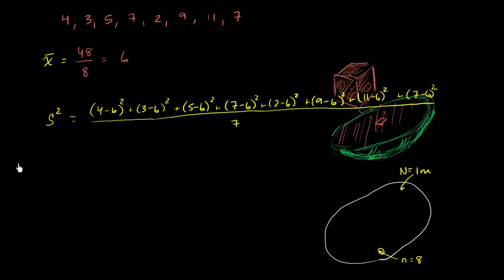And so this is going to be equal to the unbiased sample variance, and I could even denote it by this to make it clear that we're dividing by lowercase n minus 1. Let's see, 4 minus 6 is negative 2, that squared is positive 4. 3 minus 6 is negative 3, that squared is 9. 5 minus 6 squared is 1 squared, which is 1. 7 minus 6 is 1 squared, which is 1. 2 minus 6, negative 4 squared is 16.